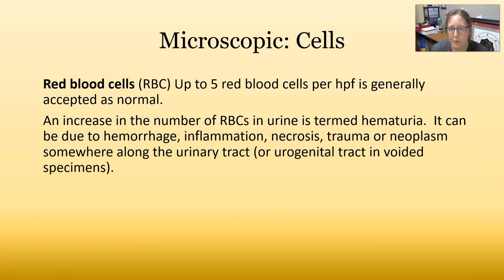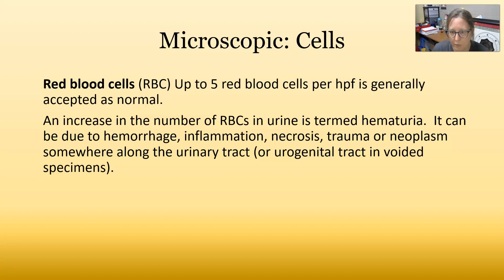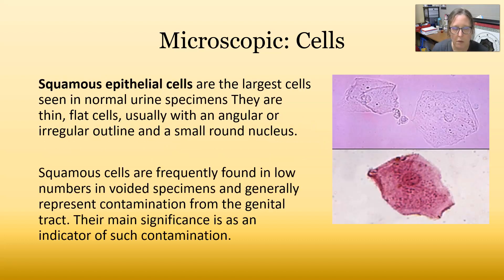Red blood cells: up to five red blood cells per high power field is generally accepted as normal. An increase in the number of red cells in urine is termed hematuria, or blood in urine. It can be due to hemorrhage, inflammation, necrosis, trauma, or neoplasm somewhere along the urinary tract. In a voided specimen it could come from the genitalia, such as menstrual blood. Squamous epithelial cells are the largest cells seen in normal urine specimens — thin, flat cells usually with an angular or irregular outline and a small round nucleus in the middle.